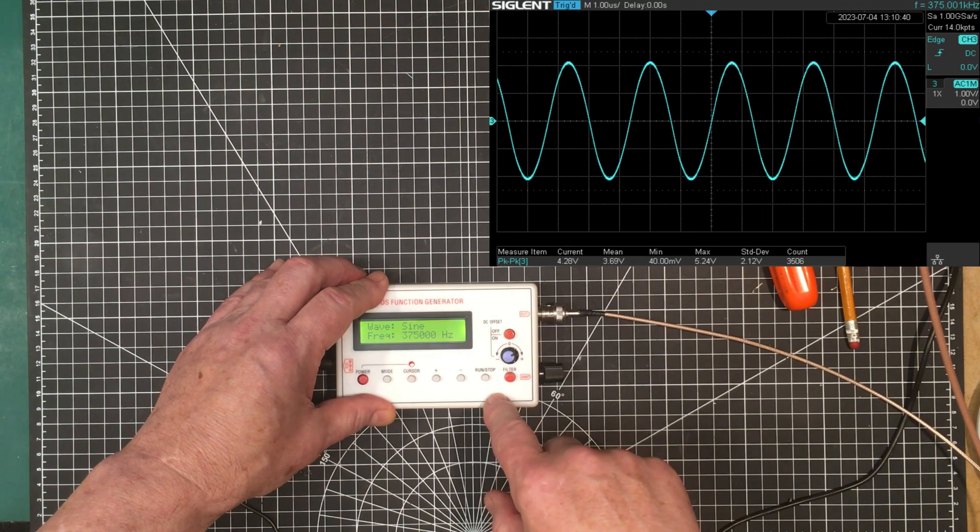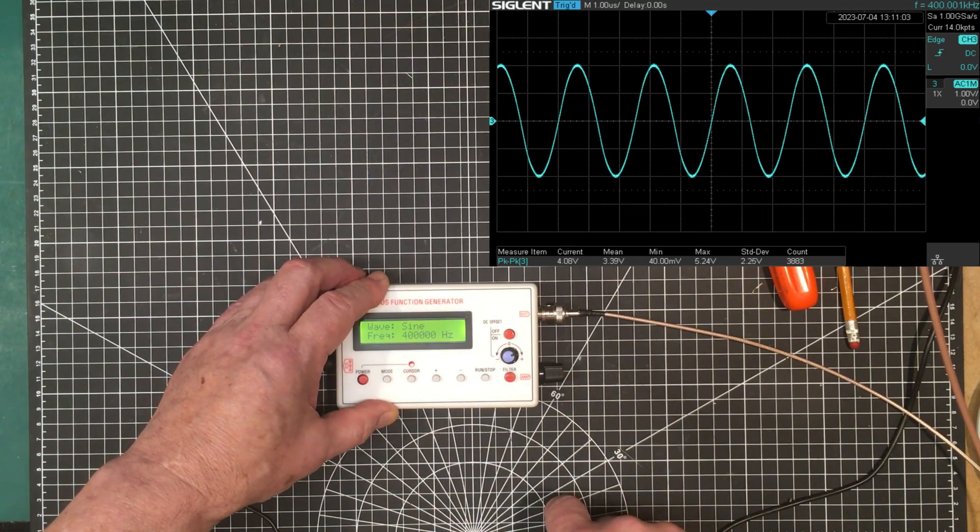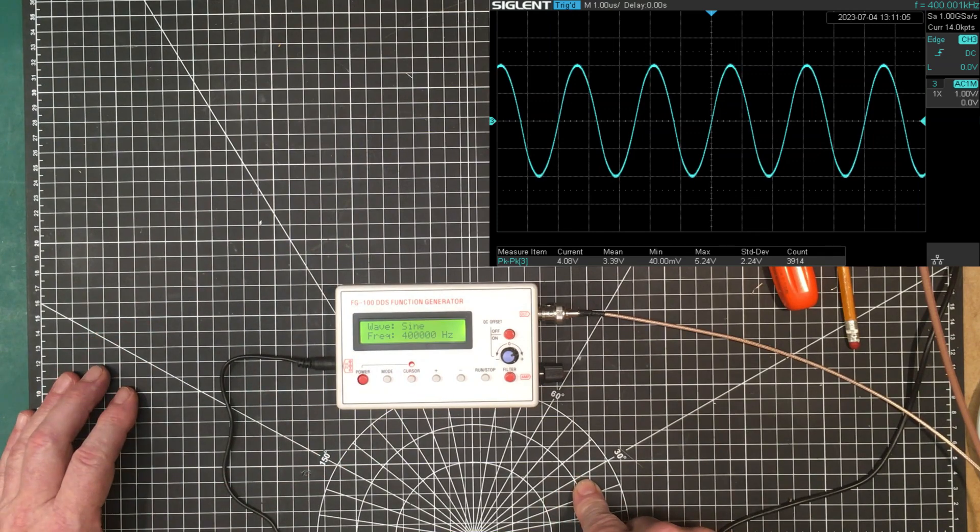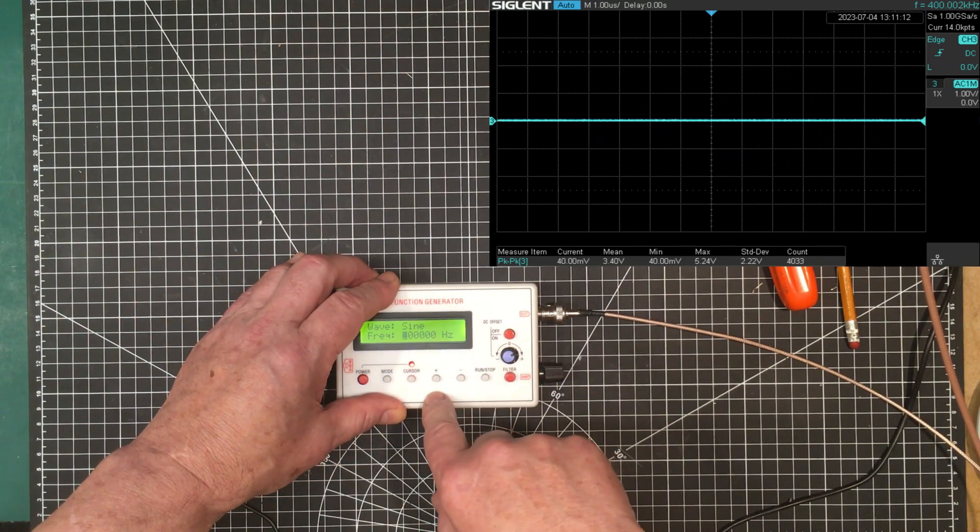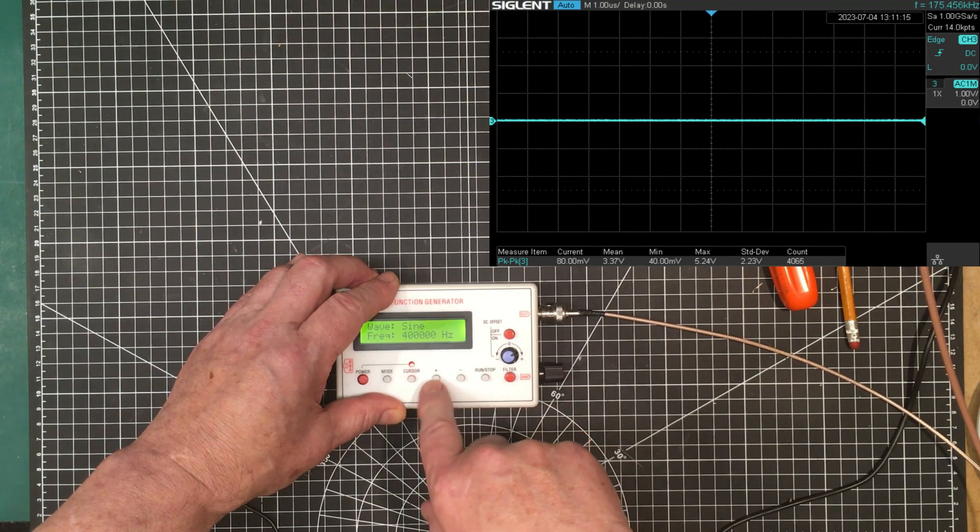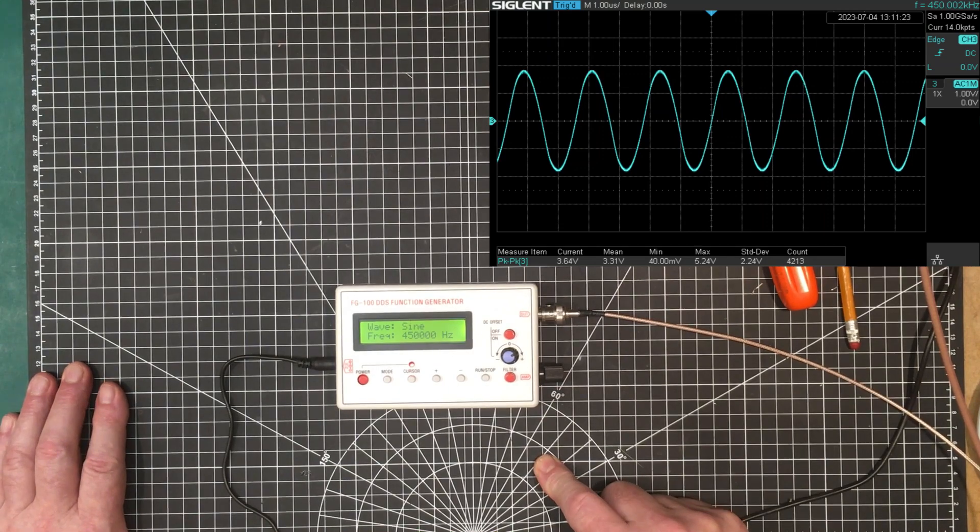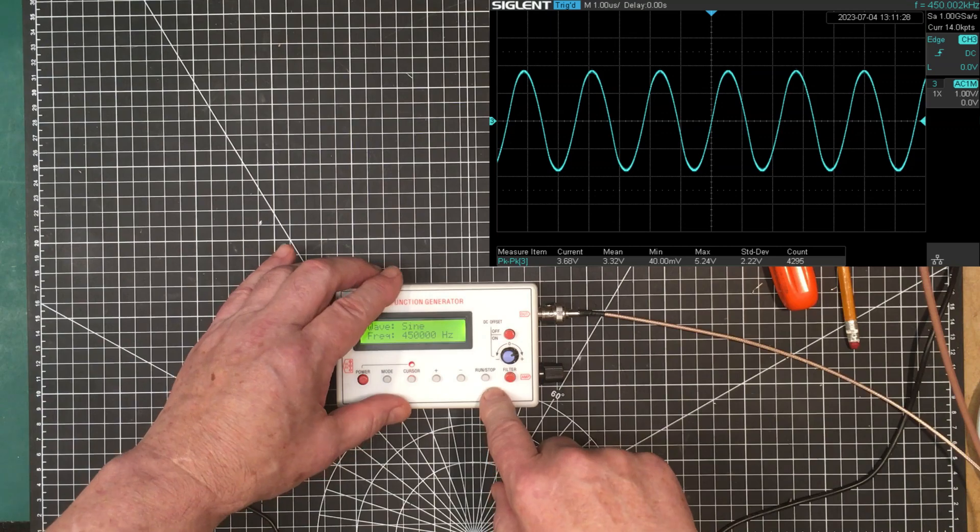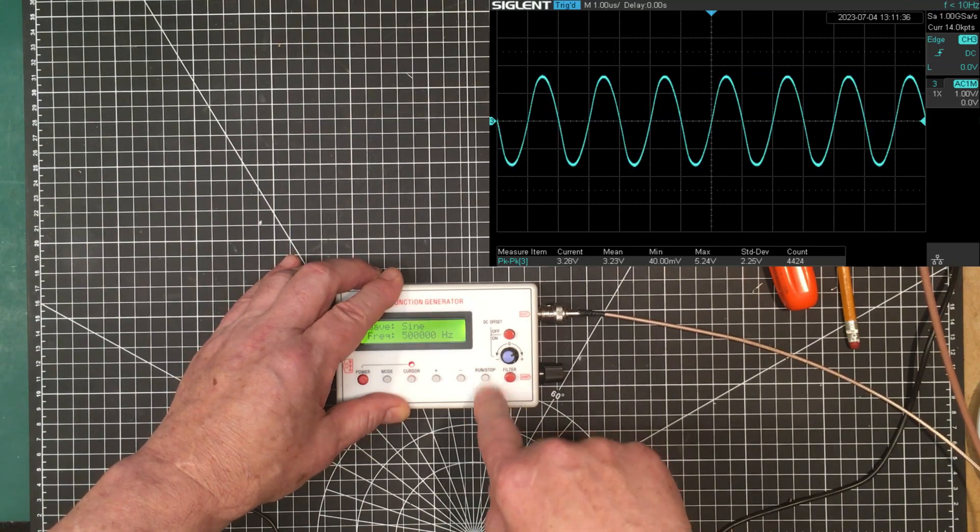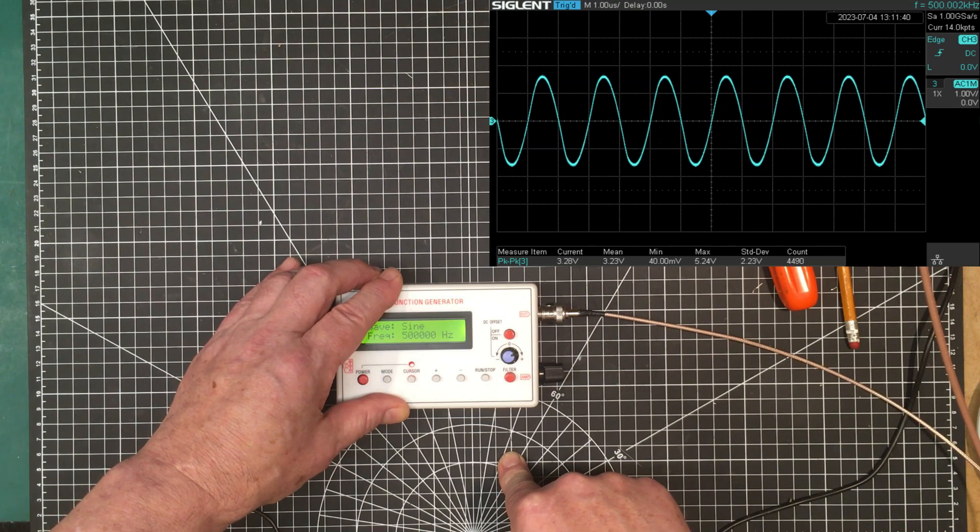At 400 kilohertz, still pretty nice. Let's try 450 kilohertz. Now we're getting a bit ugly but we can produce a signal up here. Let's do the full 500, the full monty here. And we can produce 500 kilohertz.